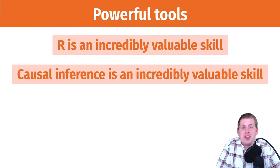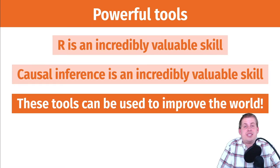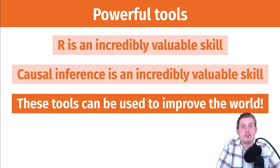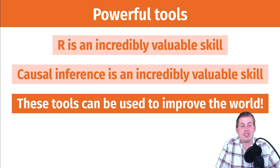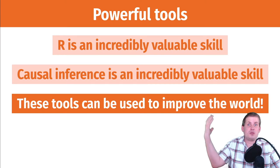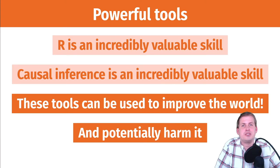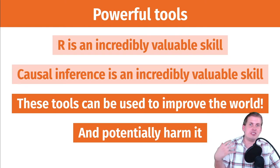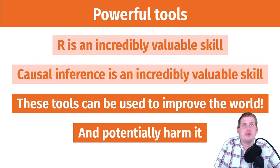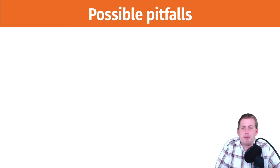All of these tools can be used to improve the world, and that's great. That's why lots of you are getting masters in public policy and public administration — you're interested in social policy, the nonprofit sector, using the power of the public sector to fix and improve the world. But at the same time you can use these tools to harm the world, either advertently or inadvertently. There are specific pitfalls you can fall into as you're doing this type of data analysis.